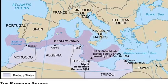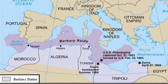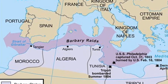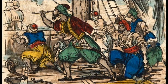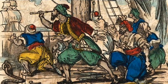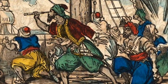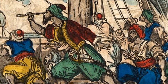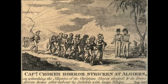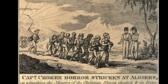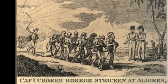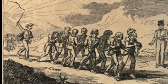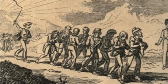The Barbary States consisted of the modern countries of Algeria, Libya, Morocco and Tunisia. Lying on the North African coast, they were home to privateers who patrolled the Mediterranean and captured merchant ships. As well as seizing their cargo, the pirates would often either enslave the crew and passengers or demand a hefty ransom for their safe return.